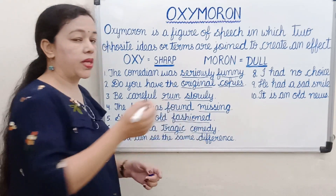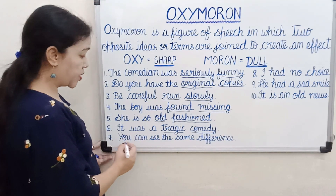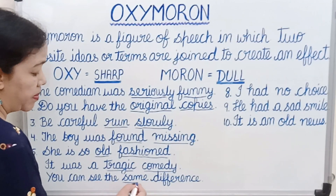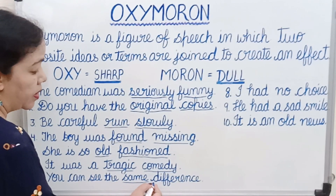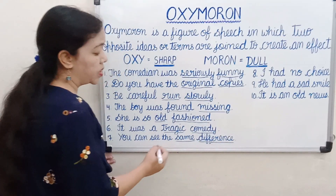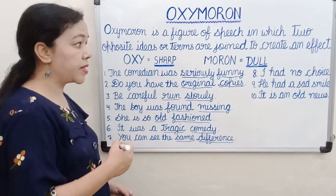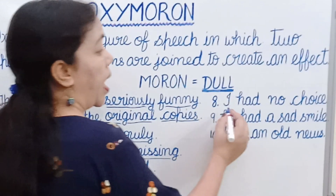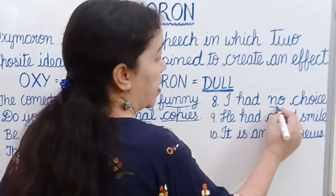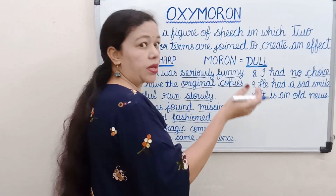Next: 'You can see the same difference.' Same means something similar and difference means something different — both are opposite words coming together in a sentence. Next: 'I had no choice.' No means nothing, and choice means a person is having a choice, so both are opposite words coming together in a sentence.